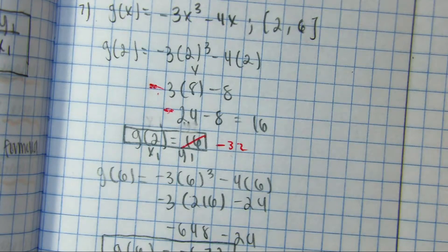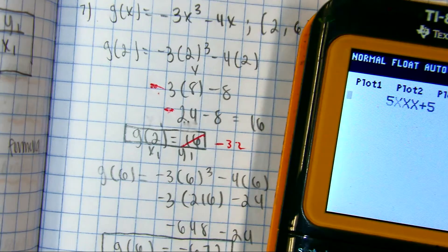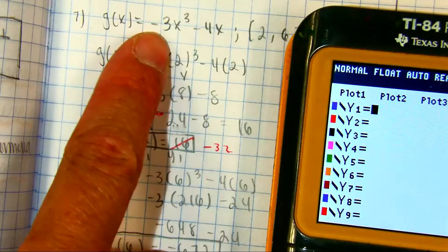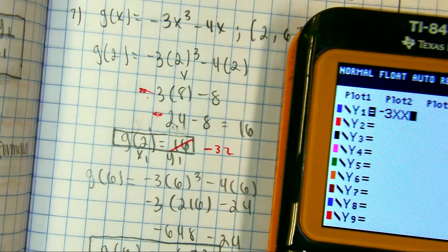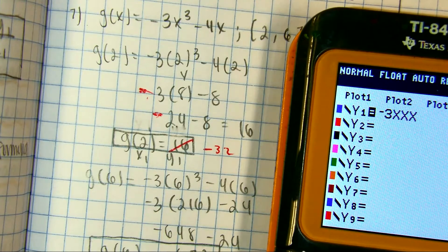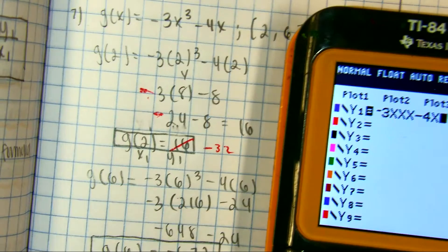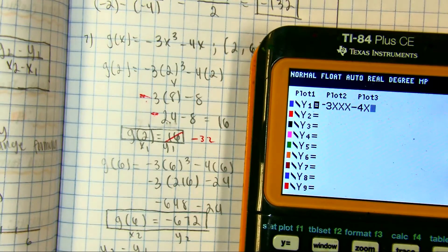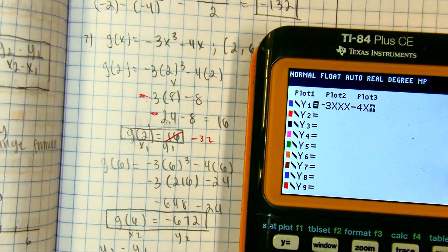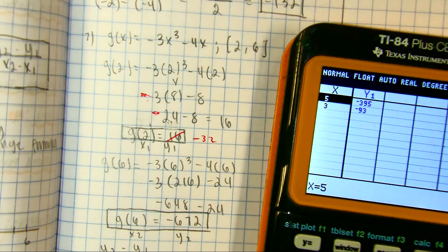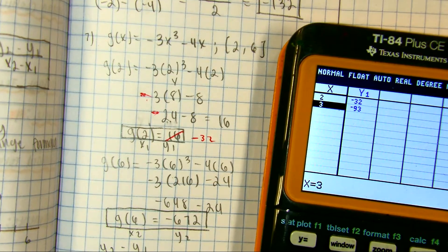So, we'll check on our calculator. I'm just going to punch this into my calculator. Negative 3x cubed minus 4x. And then I'm just going to go to my table. So, I'm going to press second graph. And then I can just punch in the number 2. Negative 32.